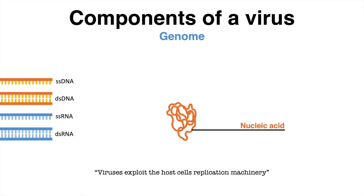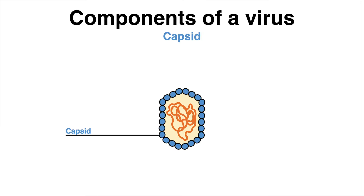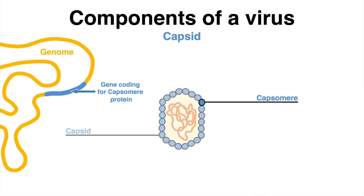The genetic information is surrounded and protected by the capsid, sometimes also referred to as the protein coat. Any virus has this feature. The protein coat is made up of small, repeating subunits called capsomeres. These protein building blocks are encoded within the viral genome.